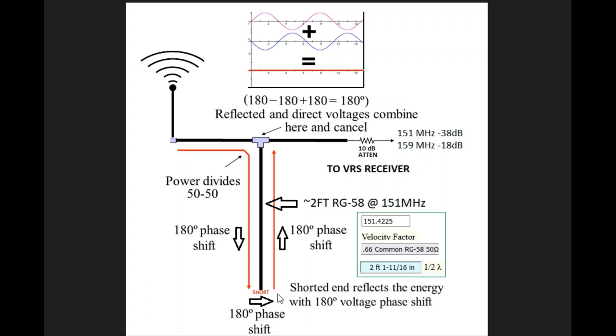For 151 frequency, it's a perfect fit where it'll come down, it'll go 180, it'll go 180 again for the short, and then another 180 for the round trip will make the signal when it gets to this point exactly 180 degrees out of phase with the main one. We can see an example with these two waveforms here, and when they're 180 degrees out of phase and you combine them, they essentially just wipe each other out to zero.